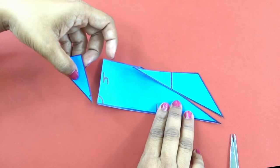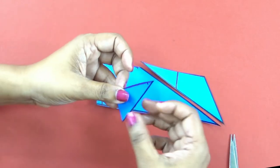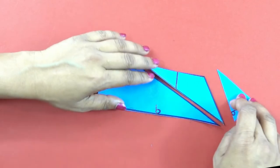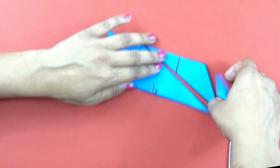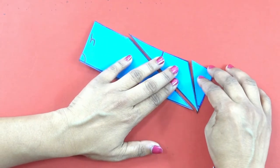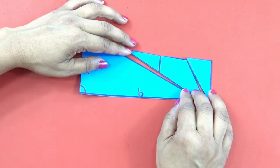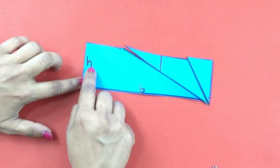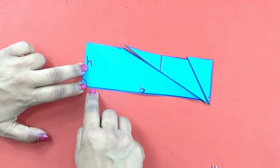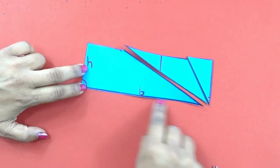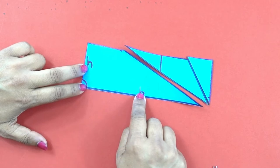So this parallelogram has now become the rectangle. See. And this rectangle has H as its height and base as B.